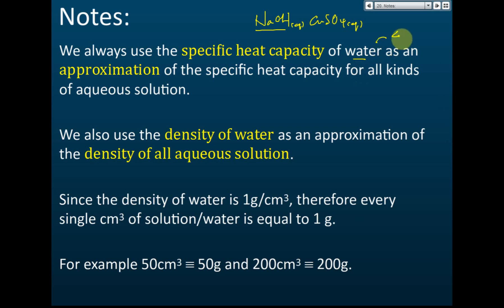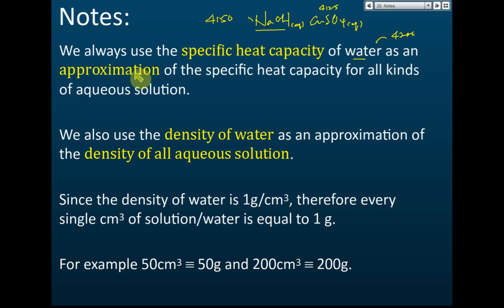For aqueous solutions, the specific heat capacity is slightly lower than that of water. For example, the specific heat capacity of water is 4,200 J/kg°C, while sodium hydroxide may be 4,150 and copper sulfate may be 4,125. However, in SPM, we always use the specific heat capacity of water as the approximation for all aqueous solutions. So no matter if it's sodium hydroxide or copper sulfate, we assume the specific heat capacity is the same as water's, since the values are very close.